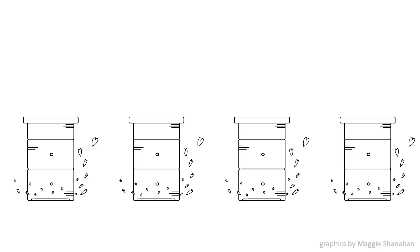These are beehives. A beehive is a house for a honeybee colony. You can think of a colony like a family unit. It contains one queen bee, tens of thousands of worker bees, male bees called drones, lots of baby bees, and hopefully a good amount of honey and pollen.